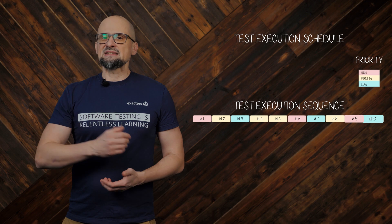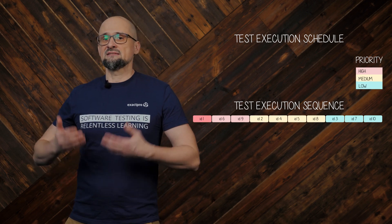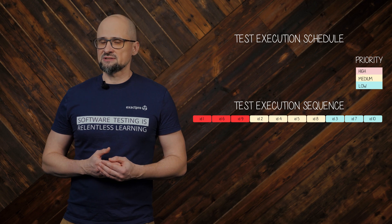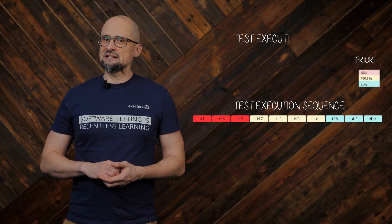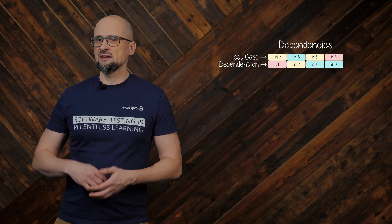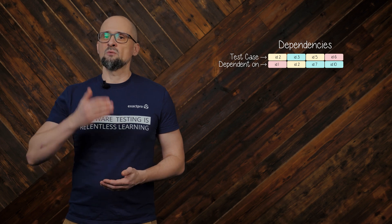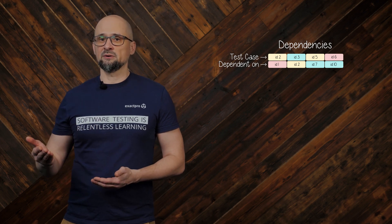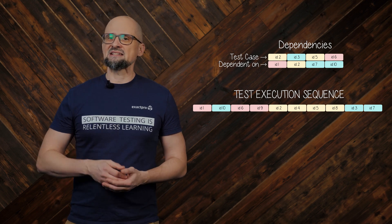After that, we can create a test execution schedule. Ideally, test cases would be ordered to run according to their priority levels, executing the highest priority test cases first. However, this may not be wise if the test cases or features being tested have dependencies. If a test case with a higher priority is reliant on a test case with a lower priority, the lower priority test case must be executed first. We also need to allocate sufficient time for confirmation and regression testing.